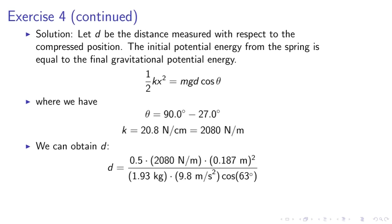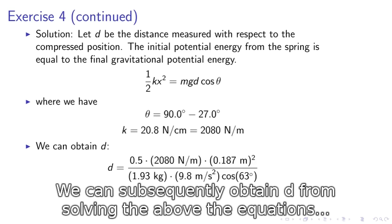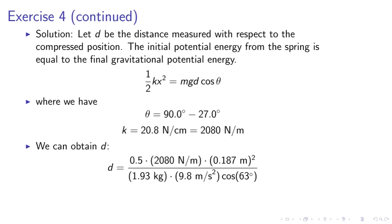We can subsequently obtain d from solving the above equations. This is the numerator: half K x squared divided by mg cosine theta.